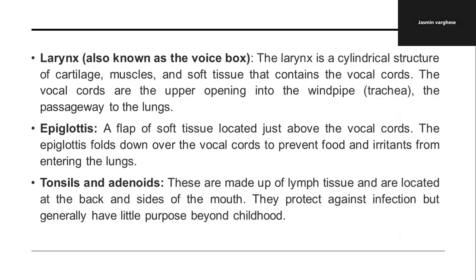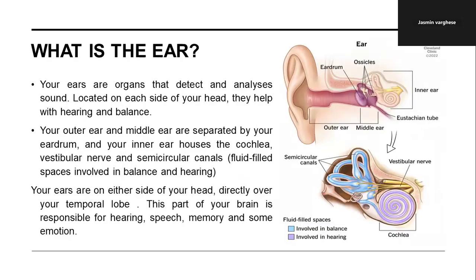To recap the throat: the larynx, also known as the voice box, is a cylindrical structure of cartilage, muscles and soft tissue containing the vocal cords. The vocal cords sit at the upper opening of the trachea, the passage to the lungs. The epiglottis is a flap of soft tissue just above the vocal cords that prevents food and irritants from entering the lungs. Tonsils and adenoids, made up of lymph tissues at the back of the mouth, protect against infection but generally have little purpose beyond childhood.